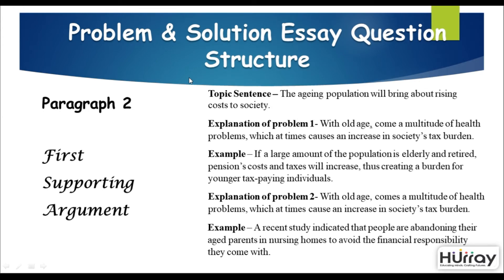In paragraph two, give the first supporting argument. The topic sentence could be: 'The aging population will bring about rising costs to society.' Explaining problem one: 'If a large amount of the population is elderly and retired, pension costs and taxes will increase, thus creating a burden for younger tax-paying individuals.' For problem two: 'With old age comes a multitude of health problems which at times cause an increase in society's tax burden.' An example: 'A recent study indicated that people are abandoning their aged parents in nursing homes to avoid the financial responsibility they come with.'